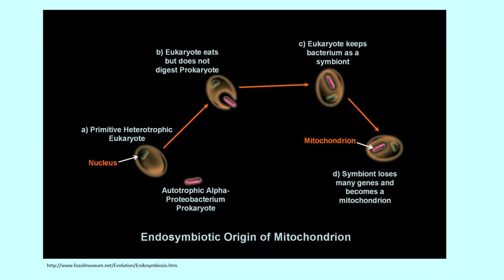The endosymbiotic theory of mitochondria holds that mitochondria evolved from an autotrophic bacterium that was engulfed by a larger heterotrophic eukaryotic cell. This eukaryotic cell itself first arose when the anaerobic prokaryote lost its cell wall and the flexible membrane underneath began to grow and fold in on itself, essentially creating a nucleus and other internal organelles.